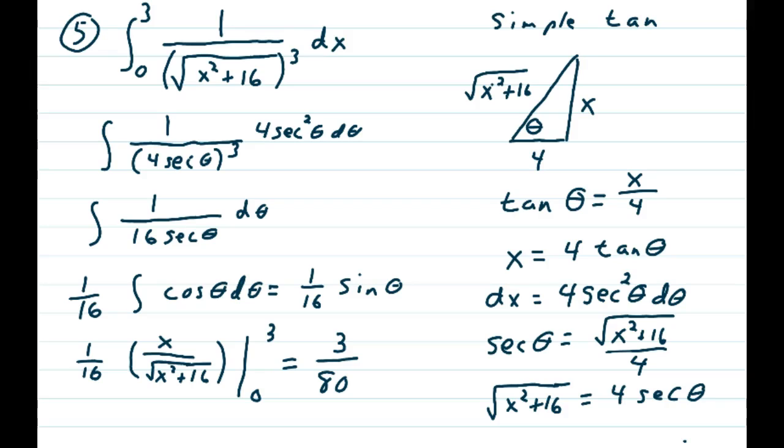This will reduce, and I end up getting 1/(16 sec θ). Be careful—there are three 4s down below and only one 4 up top. That's how you get 16.